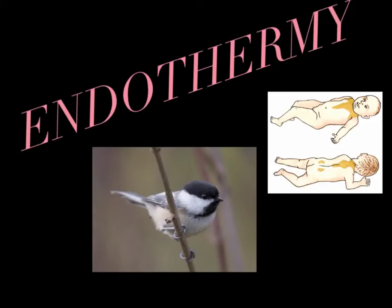Brown fat, or brown adipose tissue, in the necks and shoulders is specialized in rapid heat production. An example of shivering thermogenesis is in the chickadee. The shivering that the chickadee acts out assists it in remaining active and maintaining a body temperature of 40 degrees Celsius, even though it only weighs 20 grams and lives in negative 40 degrees Celsius environments.